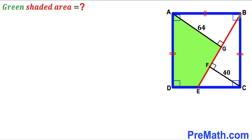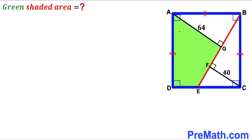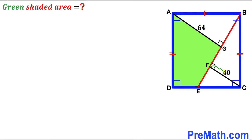Welcome to Pre-Math. In this video we have a red line segment AB fully confined in a blue square ABCD, such that line segments AG and CF are perpendicular to this red line. As a result we end up with a green shaded region. Segment AG is 64 units, segment FC is 40 units, and our task is to calculate the area of this green shaded region.